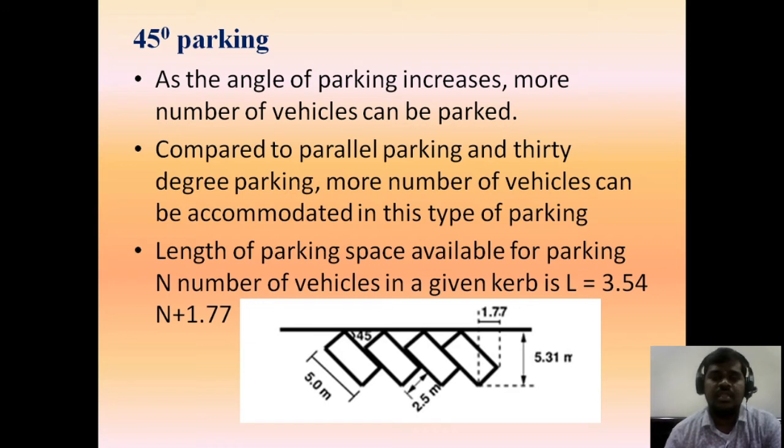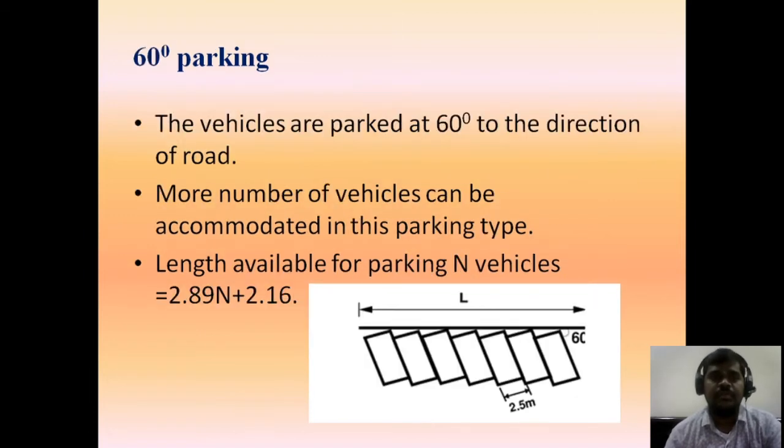This is the total length of vehicles parked at 45 degrees. When compared to 30 degrees, more parking can be allotted in 45-degree parking. Next comes 60-degree parking. When compared to 30 and 45 degrees, more vehicles can be allotted here. The length for N vehicles is L = 2.89N + 2.16.